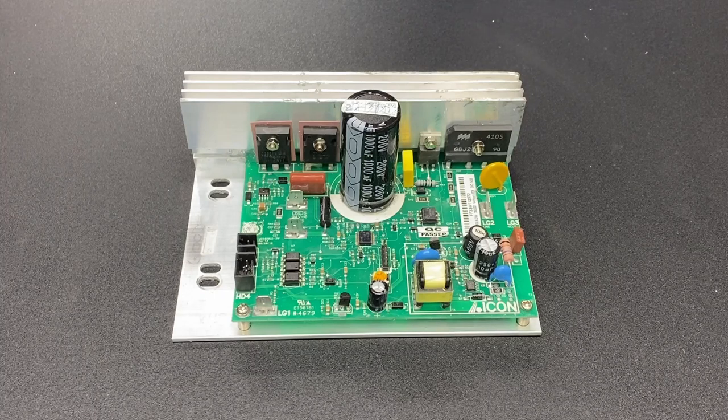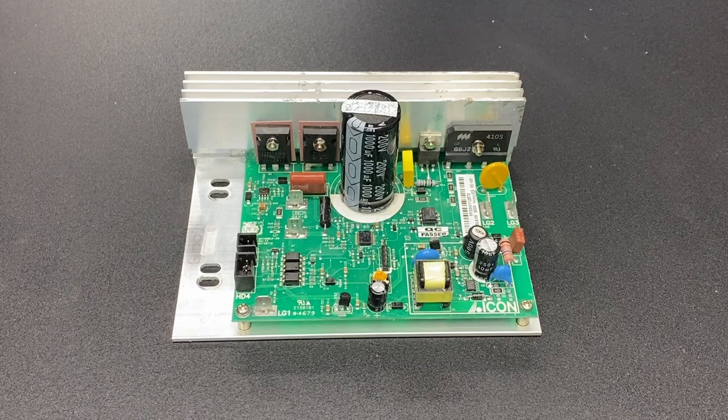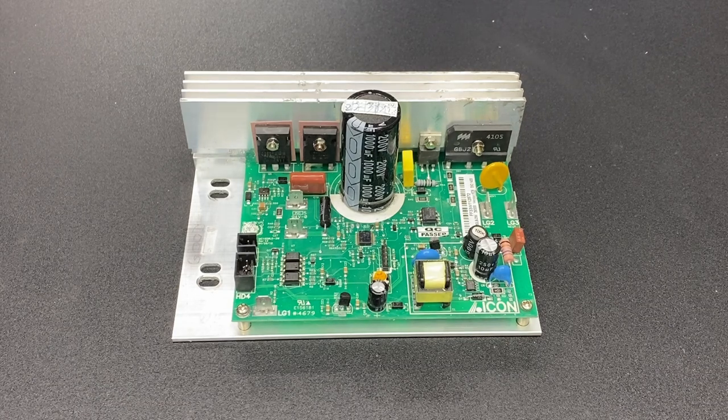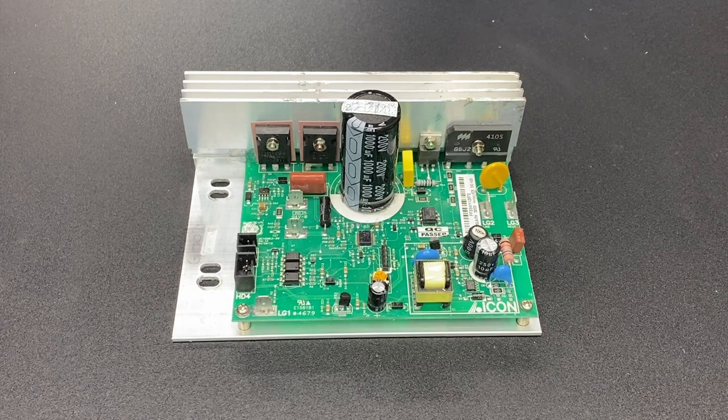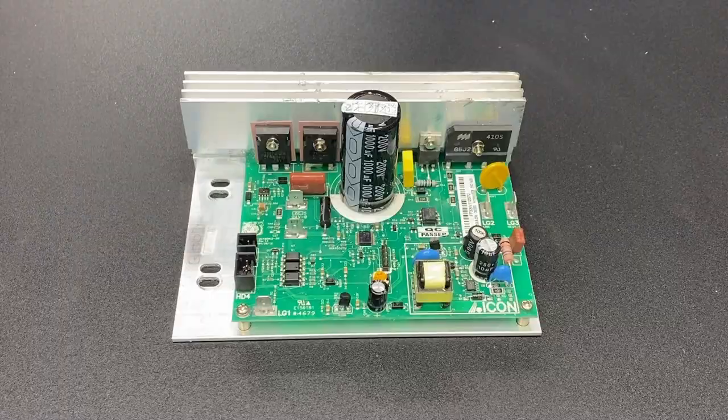This is the MC1650LS. It is another common motor control board that is found in treadmills. And just like the MC2100, it requires a signal generator in order to adjust speed.